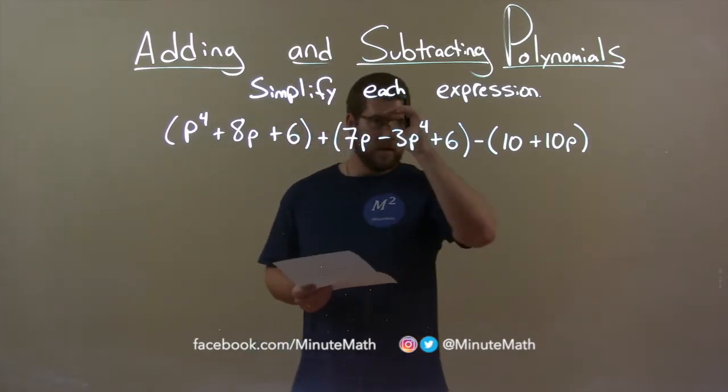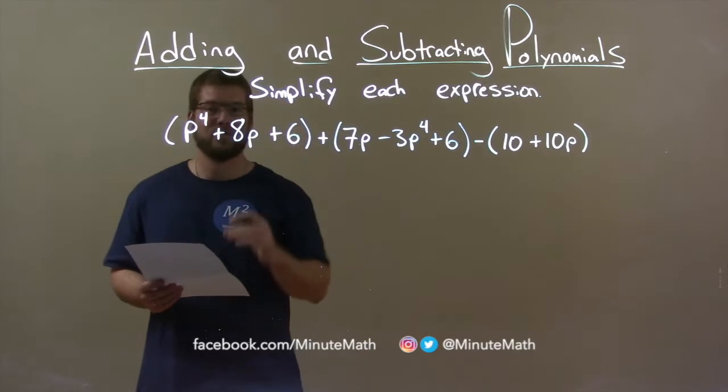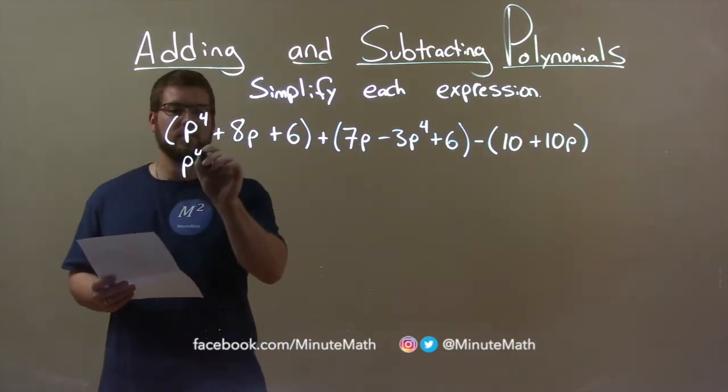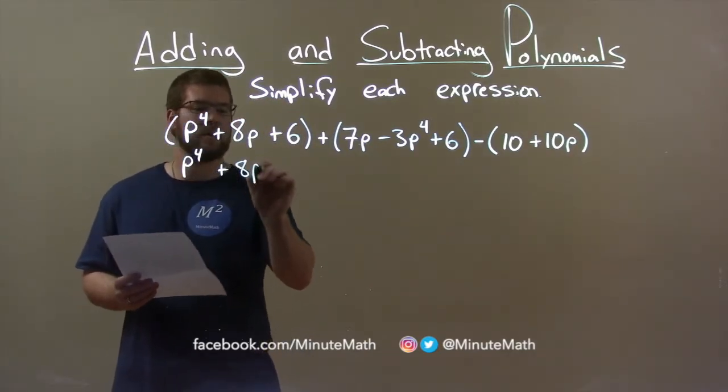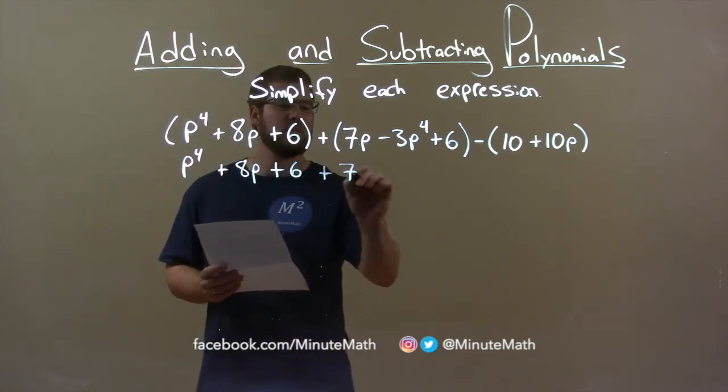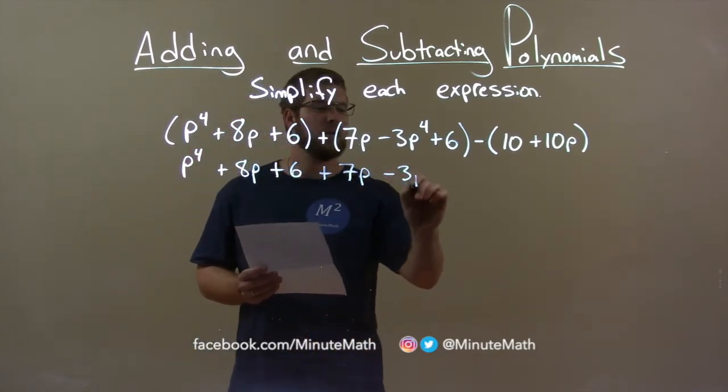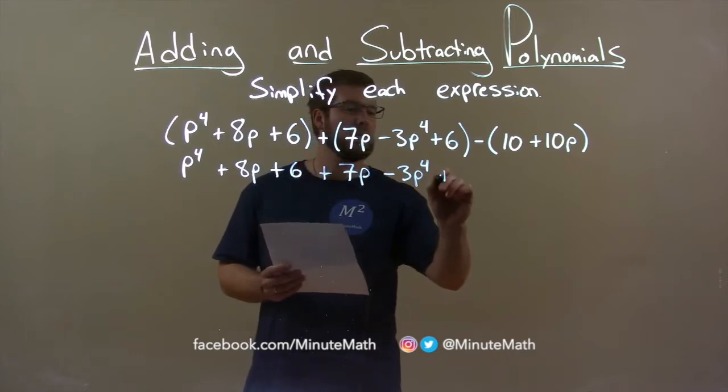From there, we distribute the minus sign to our last parenthesis. Everything else just comes down: p to the 4th plus 8p plus 6, plus 7p minus 3p to the 4th plus 6.